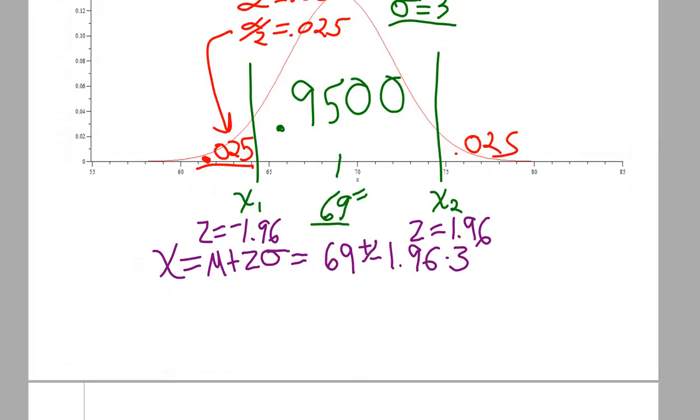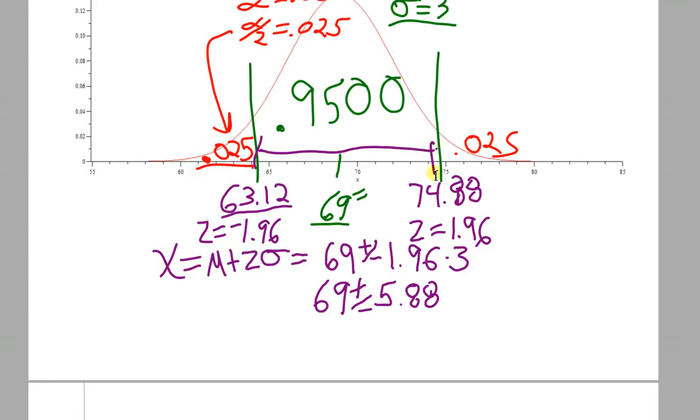Our two x's are going to be 69 plus and 69 minus 5.88 inches. And now to find those two heights, all we have to do is actually add and subtract that number to and from 69. On this end, what we're going to end up with is 63.12 inches, and that's about 5 feet 3 inches tall. And then on the upper end, we're going to end up with 69 plus 5.88, which is going to be 74.88 inches, which is almost 6 feet 3 inches. So 95% of adult men in the U.S. are somewhere between those two heights. This is about as complicated as this kind of normal distribution calculation idea gets.